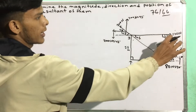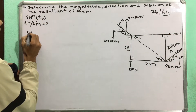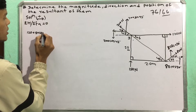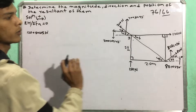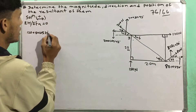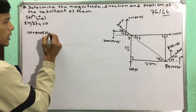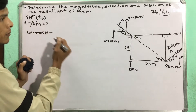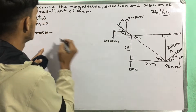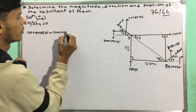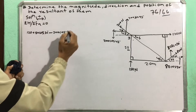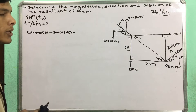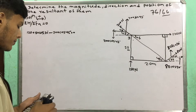This is 120 Newton. This is 80 cos 30 degrees. Now this is a minus, this is a minus. 20 cos 45 degrees. This is not a minus. This is a minus, 2 cos 45 degrees.